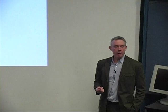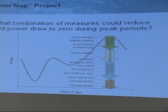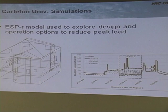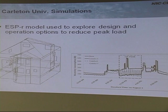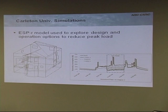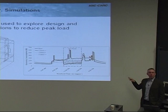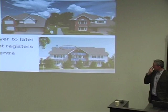This work was only part of a larger NRC project called the Power Nap project, which asked whether we could reduce a typical residential house to zero power draw from the grid during the highest peak demand periods — not just a 20–30% reduction. Beyond air conditioner direct load control, there are many other techniques to reduce peak power. We worked with a master's student at Carleton University who did simulation studies applying various techniques in concert: shading, AC load control, smart appliances, energy-efficient lighting, ventilation, and more.